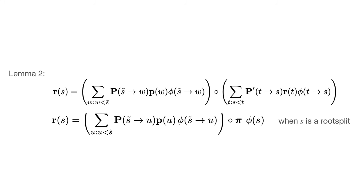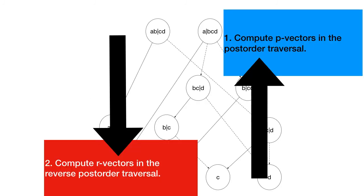Note that when S is a root split, we have a special definition given in terms of the stationary distribution. So essentially what this means is that we perform two passes over the subsplit graph. First pass towards the root splits to compute the post-order PLVs, the PPLVs, and the second pass to compute the reverse post-order PLVs or RPLVs.